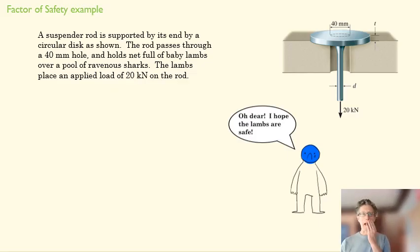All right, now let's look at a slightly more complex problem that's going to give us a little practice on shear and normal stress. So here we have a suspender rod that has an axle that is poking through a hole here, and it's a net full of baby lambs. Let's make failure really disastrous here.